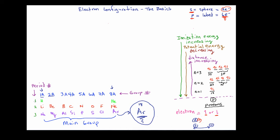The period number represents the horizontal row moving left to right across the periodic table. We are only going to be concerned with the first three periods. The period number is actually equal to the energy level that is being filled as we move left to right across the table. The group number represents what we call the valence electrons — these are the surface electrons on any particular element.